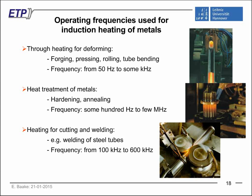Since frequency is a very important factor for the design of induction heating technologies, different processes use different frequencies. For through heating for deforming — forging, pressing, rolling — we normally use lower frequencies in the range from line frequency up to a few kilohertz. For heat treatment such as hardening or annealing, some hundred hertz up to megahertz. For cutting and welding, normally higher frequencies are used. So we use a wide range of frequencies depending on the technology we want to realize.